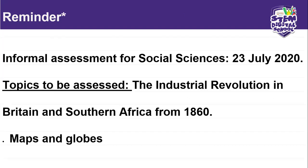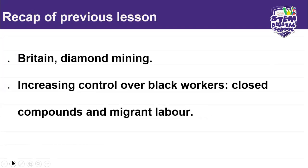Are we together, Great Aids? So next week on the 23rd, you write my test for Social Sciences, which is informal. The two topics are: for History, the Industrial Revolution in Britain and Southern Africa from 1860, and for Geography, Maps and Globes. Remember to revise and go through what we did.